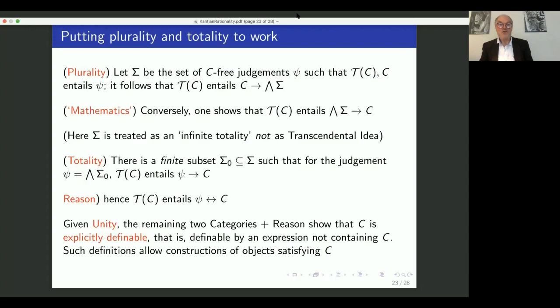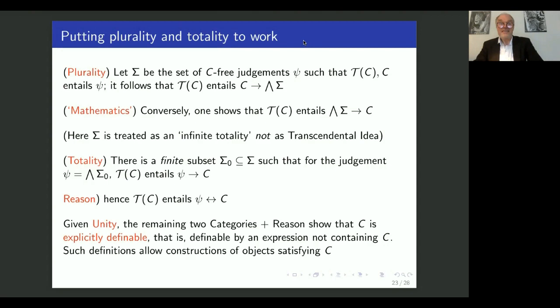I will introduce some salient points only in view of the time. So we apply plurality and construct the set sigma of judgments which do not contain C and which follow from the theory. In general, that set will be infinite and Kant knew this. And one then shows that the conjunction of all the infinite elements in the sigma, taken together, entail C.